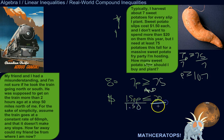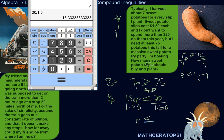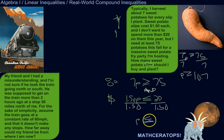So I'll divide both sides by 1.50. P is less than or equal to 20 divided by 1.50, which is 13.33 slips.